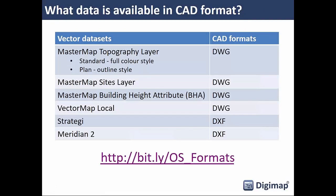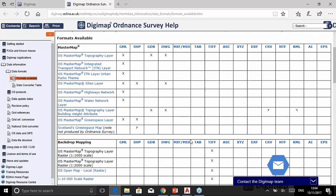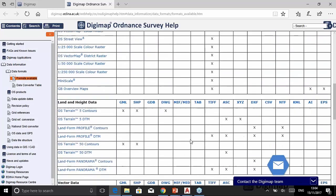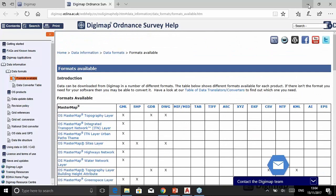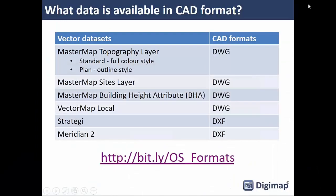This table lists all the vector datasets we provide through the Digimap service in native CAD format. The right-hand column lists the CAD format each dataset is provided in. We maintain this table on our help pages — it lists all datasets available for download and all the formats each one is available in. Not everything is available in CAD format, but the key datasets you would use in CAD are available.